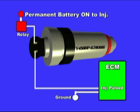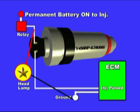To test the power feed side, rig a headlamp, which draws about 6 amps, and connect between battery negative and injector power feed. With key on, engine off, you should see a bright headlight. This verifies proper power feed.